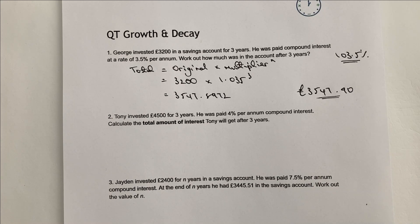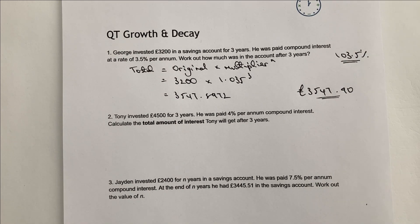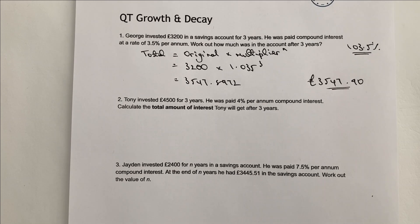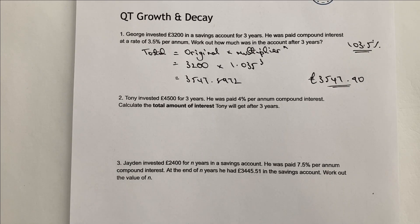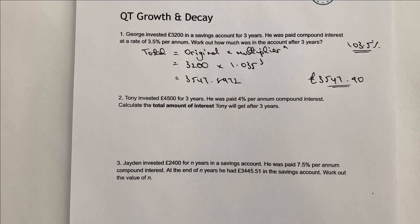However, in reality I would imagine the banks actually do round down — I'm not entirely sure on that one, but I think that they do. Number two: Tony invested £4,500. This is a similar sort of question, but we're actually going to work out the amount of interest that Tony got.